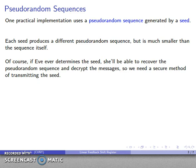Of course, the problem is that if Eve ever determines what the seed is, she'd be able to use the seed to generate the pseudorandom sequence and then decrypt the message. So we do need a secure method of transmitting this seed value. And that's an important cryptographic consideration that we'll talk about a little bit later.